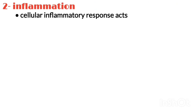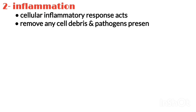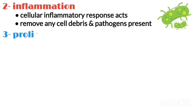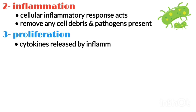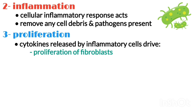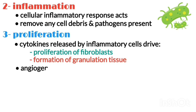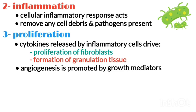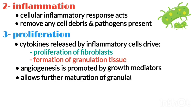Number two is inflammation. A cellular inflammatory response acts to remove any cell debris and pathogens present. Number three is proliferation. Cytokines released by inflammatory cells drive the proliferation of the fibroblast and the formation of granulation tissue. Angiogenesis is promoted by the presence of growth mediators, for example VEGF, allowing for further maturation of the granulation tissue.